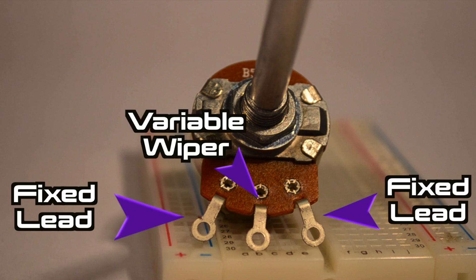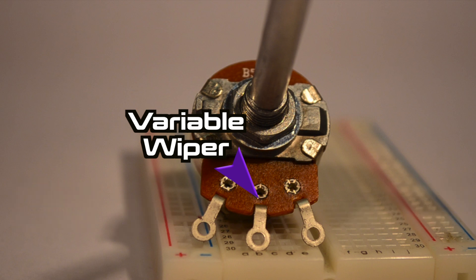But in potentiometers, there's a third lead that sweeps back and forth between the two ends. Commonly referred to as a wiper, this lead is the key to creating varied resistance values.